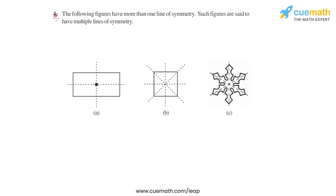In question number 4 of this first exercise, we have a following set of figures with more than one line of symmetry. Any such figures with more than one line of symmetry are said to have multiple lines of symmetry. Now let us see the set of figures one by one.